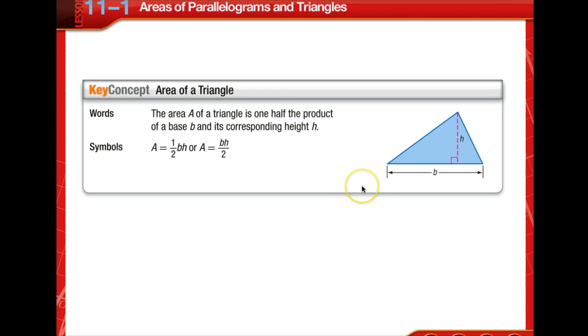By the area congruence postulate, the two congruent triangles have the same area. So one triangle with base B and height H has half the area of a parallelogram with base B and height H. That's how we get this key concept. The area of a triangle is one half the product of a base and its corresponding height.